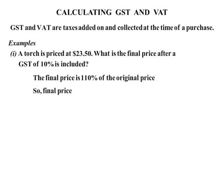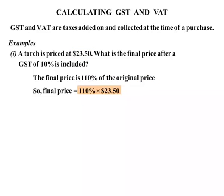So therefore the final price is 110% of $23.50. We can write that 110% as a decimal, which is 1.1. So it equals 1.1 times $23.50. When we calculate that, it works out to be $25.85.